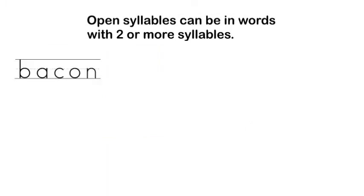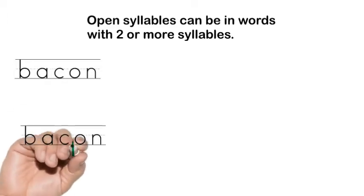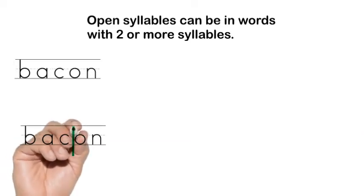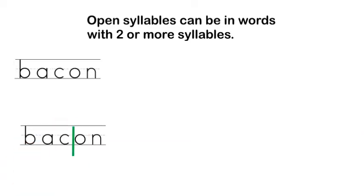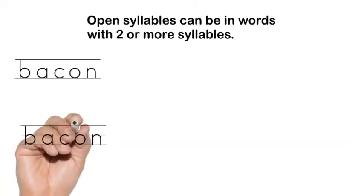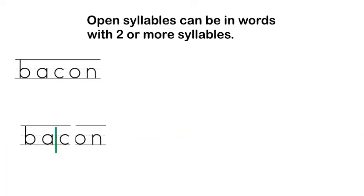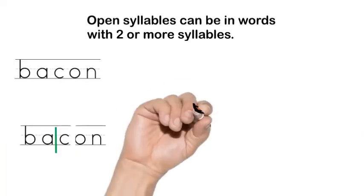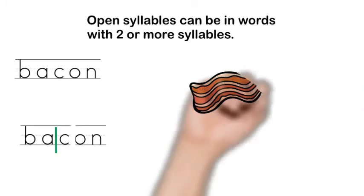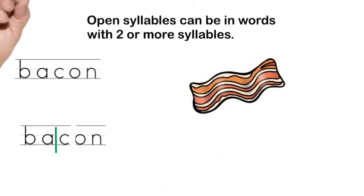Let's try it with another word. We have B-A-C-O-N. Let's go ahead and break it between the C and the O. If I do that, it will say back-on. Back-on — that doesn't sound quite right. Let's break it between the A and the C. Now I have an open syllable, BA, and a closed syllable, CON. Ba-con. Yes, that sounds right.